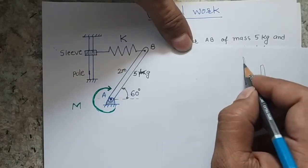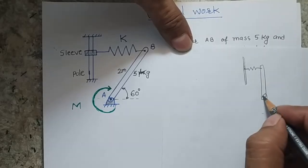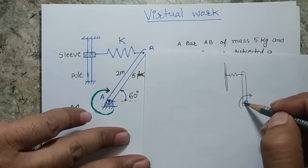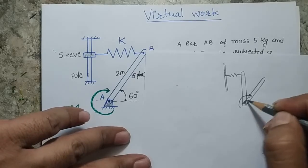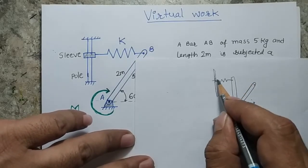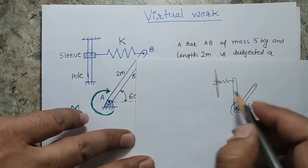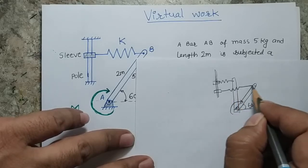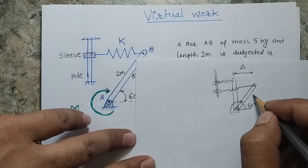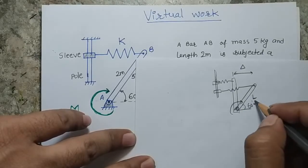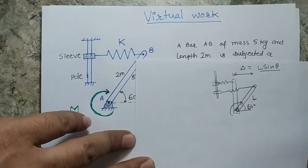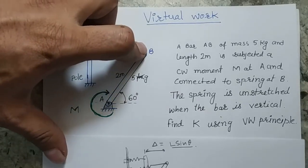If the spring is fixed at one point and the system is given a movement, the rod reaches a configuration at angle 60 degrees. When it reaches there, the spring extends, but this end of the spring is able to slide vertically, so the spring acquires a horizontal configuration. The extension in the spring equals L sin θ. So if I know the length of the rod and the angle, this value will be L sin θ.